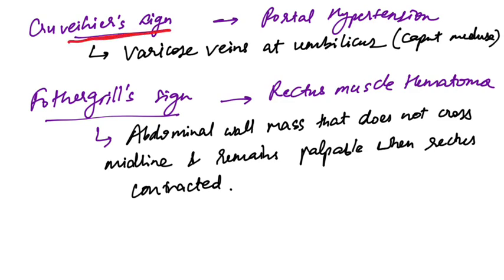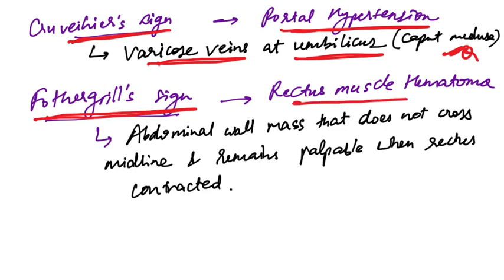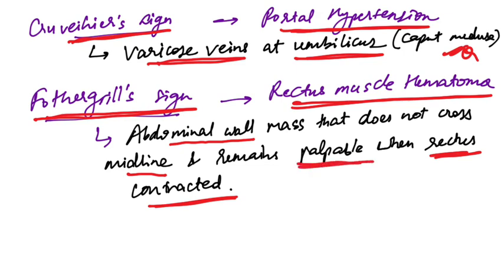Cruveilhier's sign shows varicose veins at the umbilicus, also called caput medusae, seen in portal hypertension. Fothergill sign is an abdominal wall mass that does not cross the midline and remains palpable even when the rectus is contracted, seen in rectus muscle hematoma.